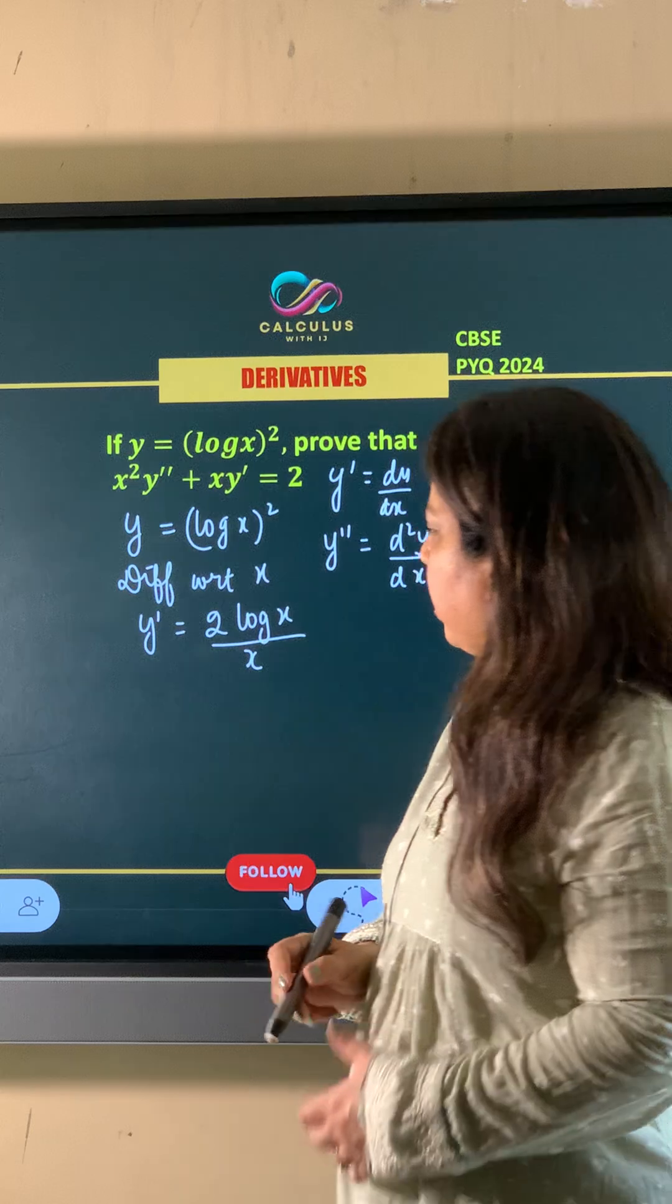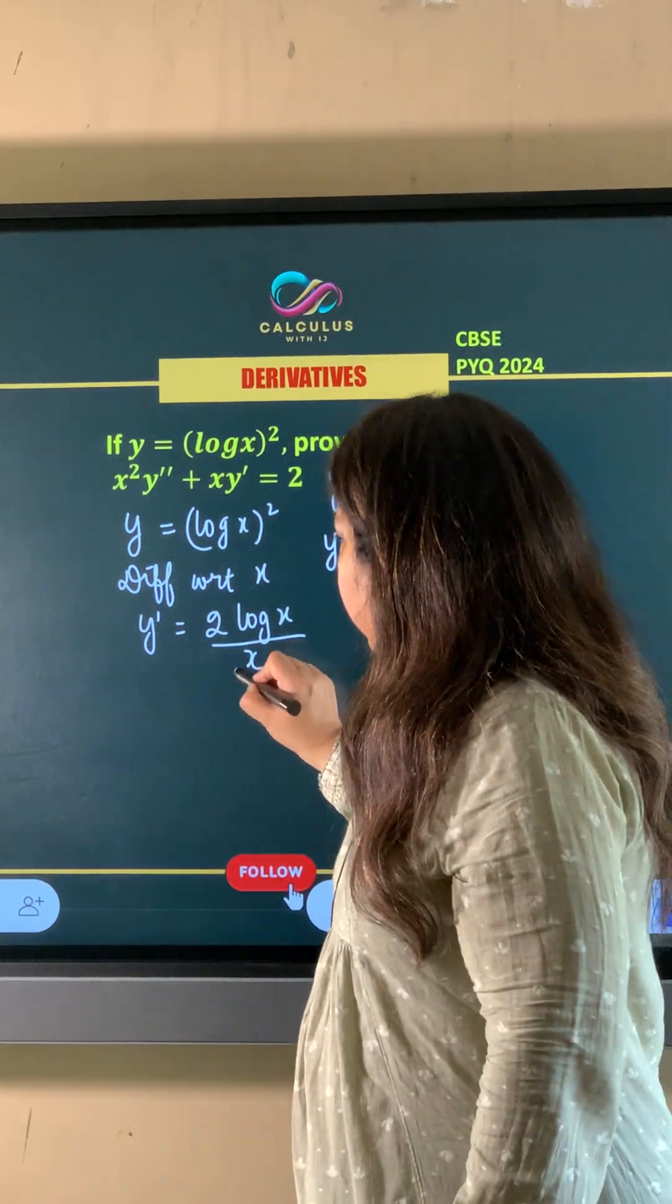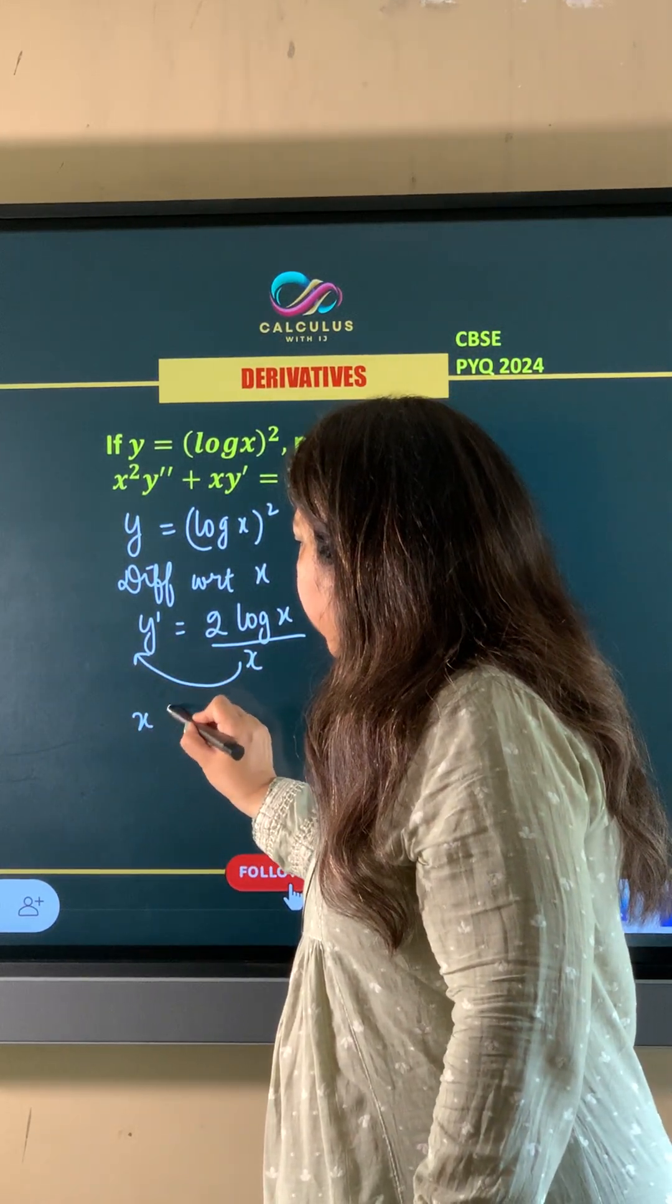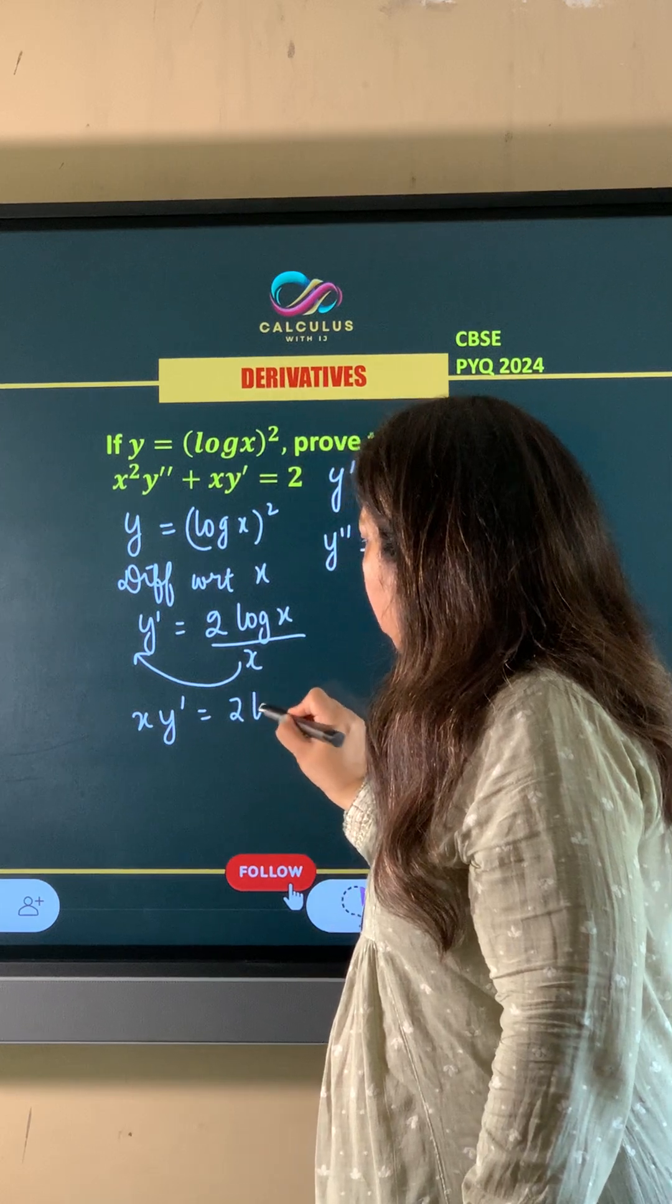To, 2 log X upon X is the derivative. Now, we take X to other side, to, X Y dash is equal to 2 log X.